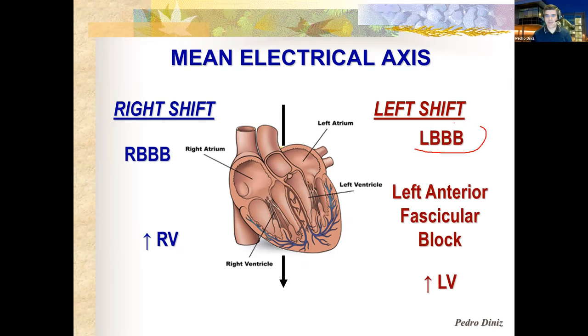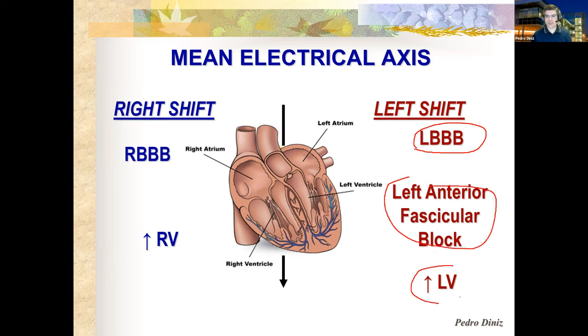So left bundle branch blocks, block of the left anterior fascicle, or an increase in the size of the left ventricle will be the most common causes of leftward axis deviation.